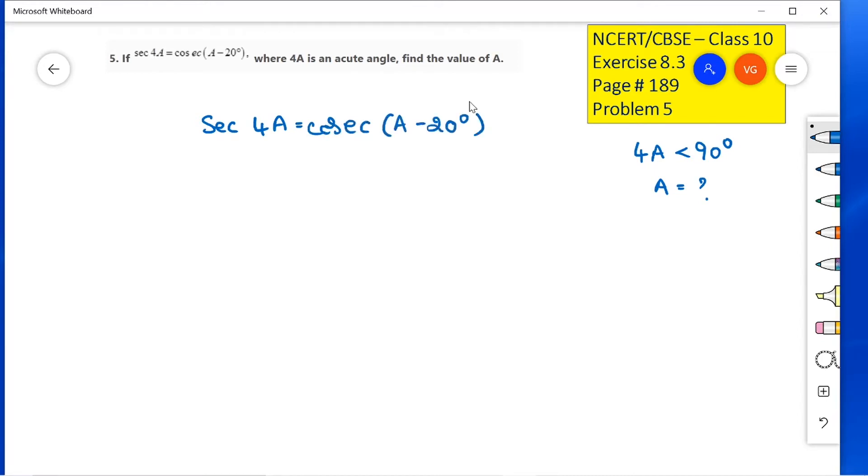Remember, secant and cosecant are complementary pairs. That is, secant (90 minus theta) equals cosecant theta, and cosecant (90 minus theta) equals secant theta.